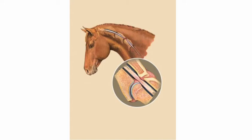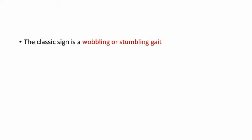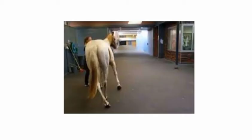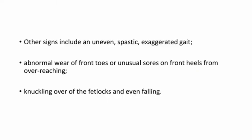The classic sign is a wobbling or stumbling gait. These clinical signs are common in equine wobblers and also canine wobblers as well. This picture shows a stumbling gait in the horse — you can see the crossing over of the hind legs, which is a peculiar clinical sign seen in canine wobblers. Other signs include an uneven, spastic and exaggerated gait, abnormal wear of front toes, unusual sores on front heels from overreaching, knuckling over of the front legs, and even falling.